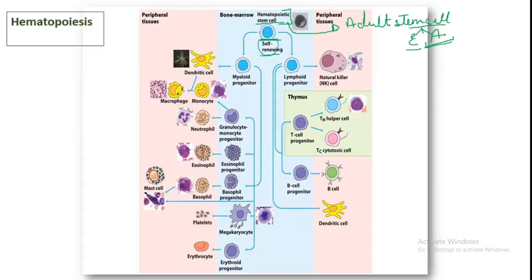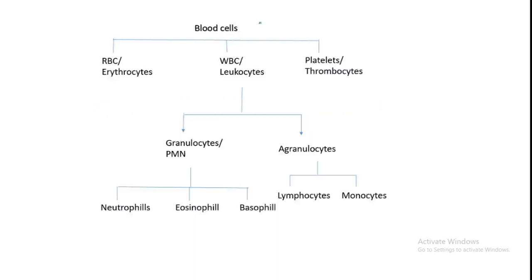Here is an overview of blood cells. Blood cells include RBCs (erythrocytes), WBCs (leukocytes), and platelets (thrombocytes). WBCs or leukocytes are divided into two groups: granulocytes and agranulocytes. Granulocytes are cells with granules present, also called PMN — polymorphonuclear leukocytes. Agranulocytes are cells where granules are absent.